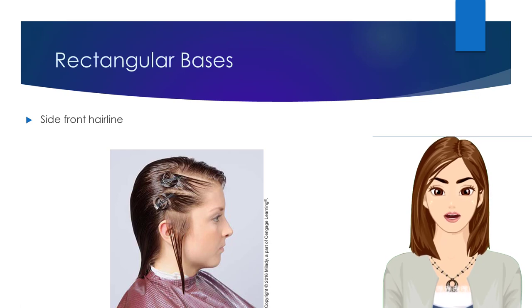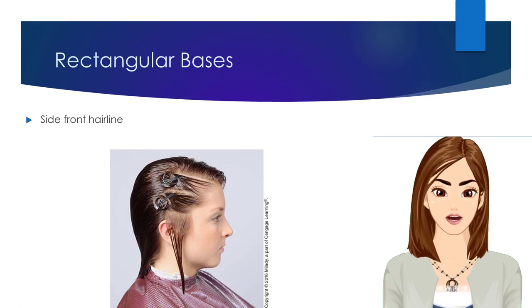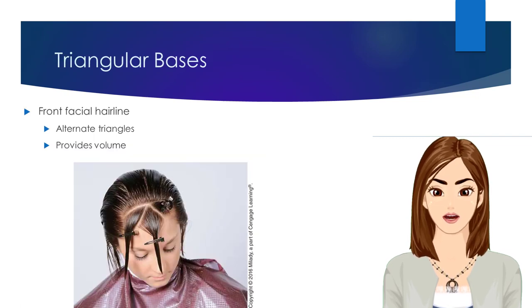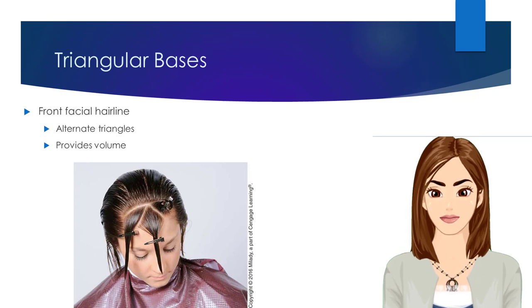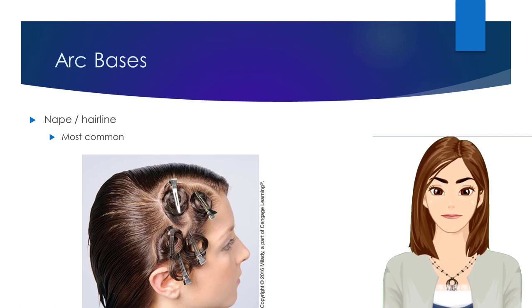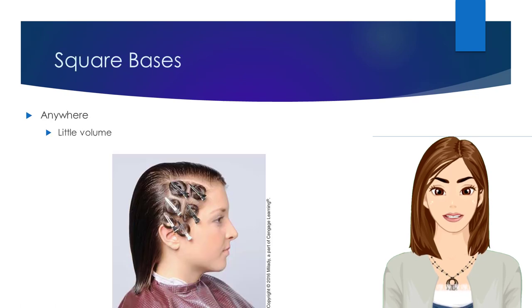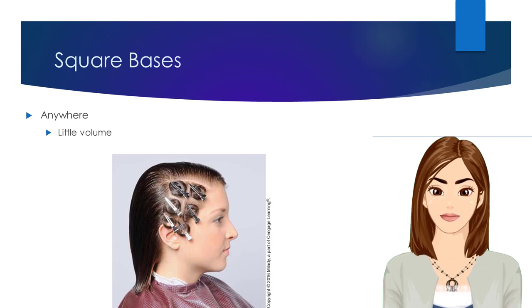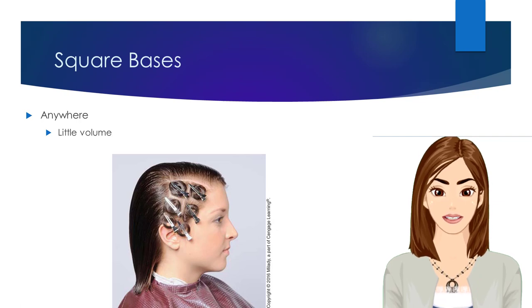The shape of the base does not affect the finished curl. Rectangular base pin curls are recommended at the side front hairline, to create a smooth, upswept effect. Triangular base pin curls are recommended along the front or facial hairline, to help prevent splits and breaks in the finished hairstyle. Arc base pin curls are those carved out of a shaping, and lie flat against the scalp. Arc base pin curls are the most commonly used, and give pin curls a good direction. Square base pin curls are suitable for curly hairstyles where little to no volume or lift is desired, and can be used on any area of the head, although staggered or brick-laid sections are recommended.